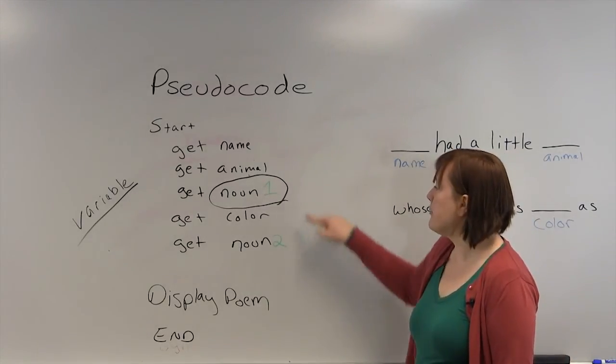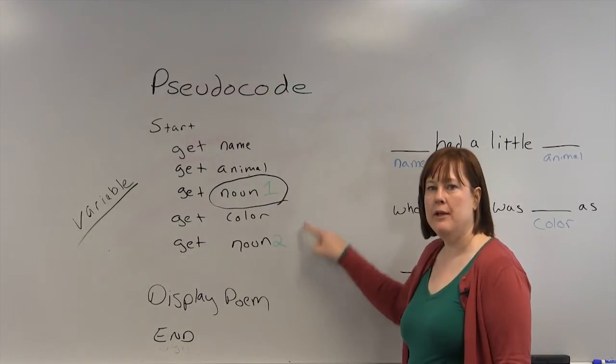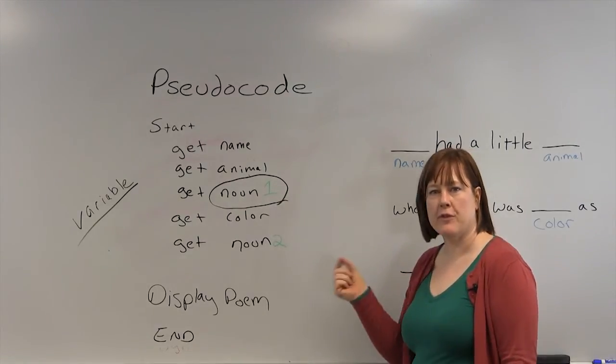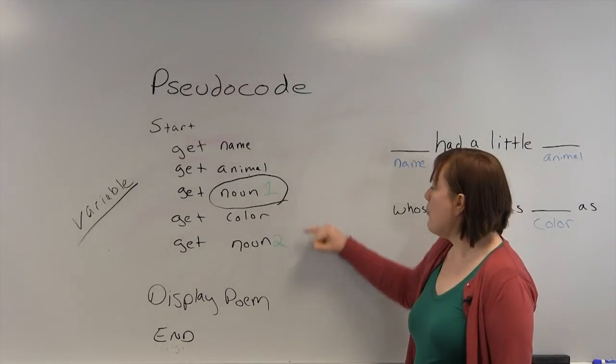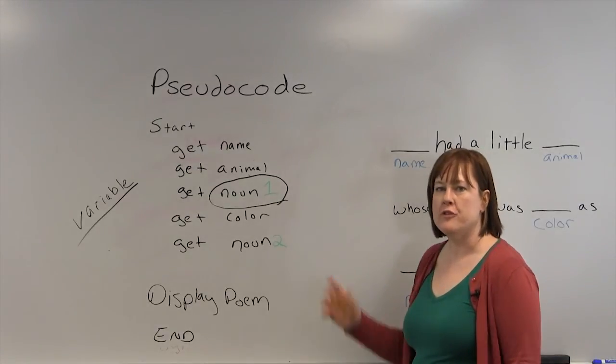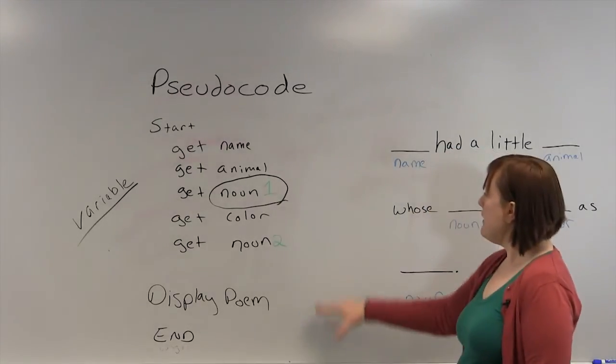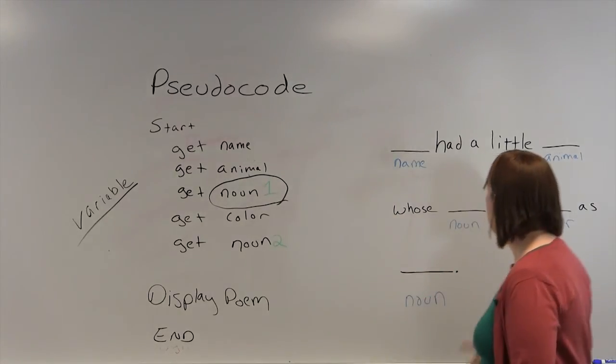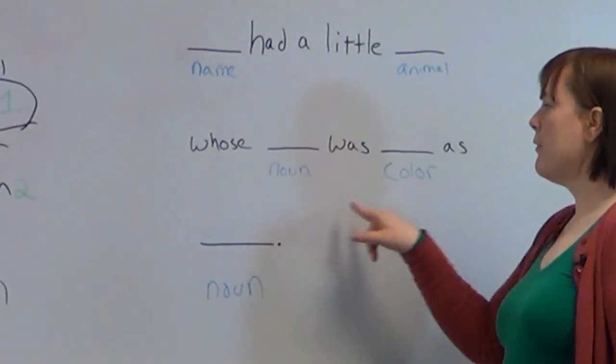So if you're going to use it, it has to have a unique name. We couldn't use noun twice because it would refer to the same thing. So you need noun one and noun two to indicate that they are two separate fields. And that would be the pseudocode for doing Mad Libs for Mary Had a Little Lamb.